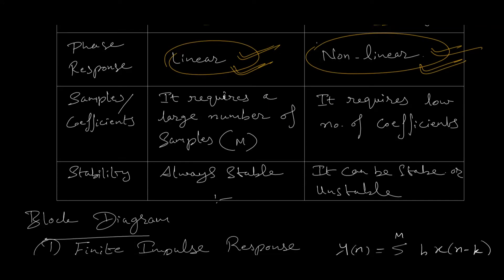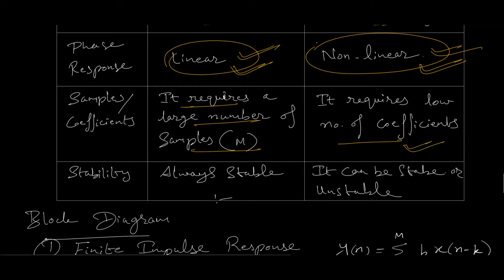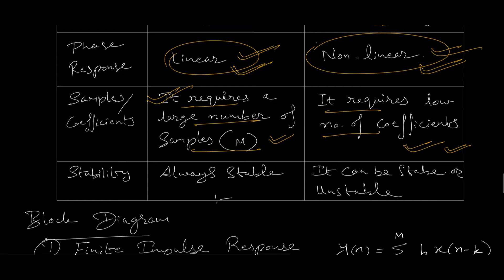Next is the number of samples or coefficients to be used. For FIR filters we need more samples, denoted with M, but for IIR the coefficients required are less. This is because for FIR filters only zeros are available, but for IIR filters both zeros and poles are available. Therefore, FIR filters will have fewer placements in the Z-plane, but IIR filters will have arbitrary placements in the Z-plane. This is why FIR filters do not offer much flexibility in terms of frequency responses, whereas IIR filters have more flexibility, which is why they are used for very high speed RF applications.